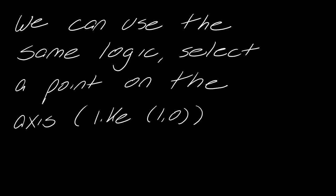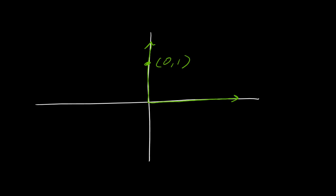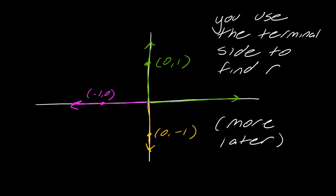We want to use the same logic from before: select a point on the terminal side, just somewhere on the axis — like (1, 0), (0, 1), (-1, 0), or (0, -1). With quadrantal angles, while you can't form a right triangle, you use the terminal side to help you find R. I'll show you how to do this in a few minutes, but that's the key logic.